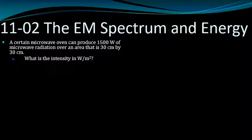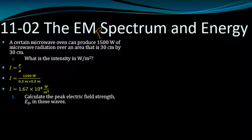A certain microwave oven can produce 1500 watts of microwave radiation over an area that is 30 centimeters by 30 centimeters, which is 0.3 meters by 0.3 meters. So our intensity is 1.67 times 10 to the 4th watts per meter squared.